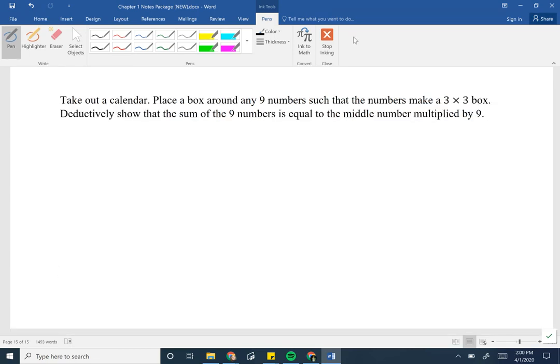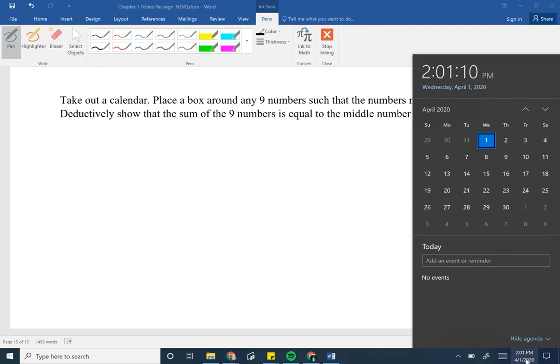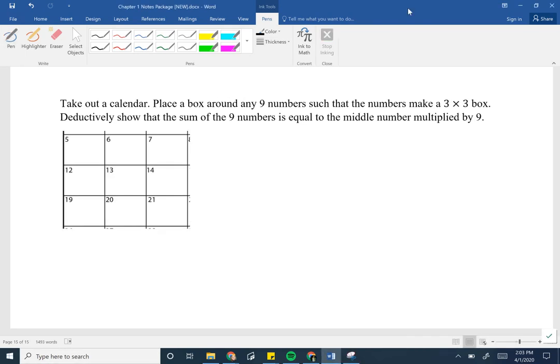Example two. Take out a calendar. Place a box around any nine numbers such that the numbers make a 3 by 3 box. Deductively show that the sum of the nine numbers is equal to the middle number multiplied by nine. First, what I need to do is pull out a calendar. What I'm going to do with this calendar is I need to take any three by three box. So any of these would work. I'm going to take a snip of these nine numbers right here. Here's my snipped calendar. What we're trying to show is that if I find the sum of these nine numbers, that it's going to be equal to the middle number multiplied by nine. Let's just first just check that this actually works. So when we find the sum, we get a sum of 117. What I notice is if I take the middle number, which is 13, and I multiply it by nine, I also get 117.